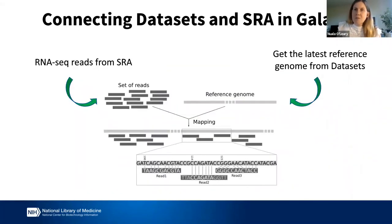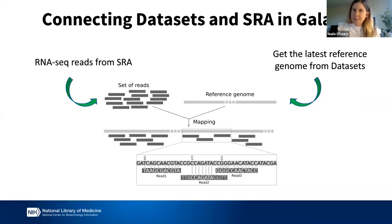How does this connect to SRA? Now you'll have a way to get the latest reference genomes directly from NCBI — the newest files and the latest annotations. So if you need to do an RNA-seq alignment to a reference genome, you'll be able to get that newest reference genome directly within Galaxy or through NCBI and Send to Galaxy. Now I'll pass over to Adam.